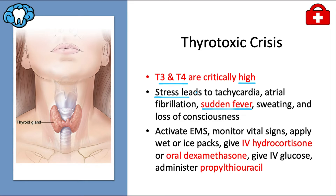The response to thyroid storm is similar to the Addisonian crisis: call 911, monitor vitals, apply wet or ice packs to help with the fever, give IV hydrocortisone or oral dexamethasone to inhibit release of thyroid hormone, administer an IV glucose solution, and give propylthiouracil, which is an anti-thyroid medication. CPR may sometimes be needed depending on severity.